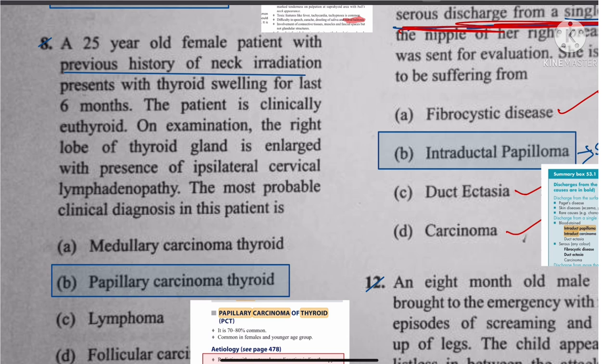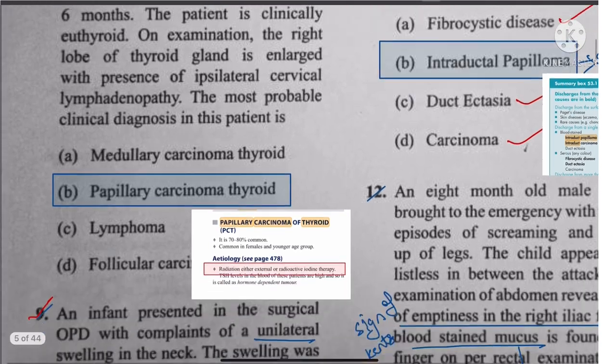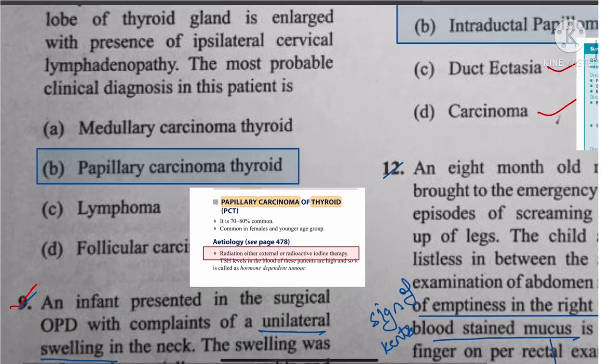Question 8: The cancer associated with a previous history of neck irradiation is papillary carcinoma of the thyroid. The answer is papillary carcinoma of the thyroid.